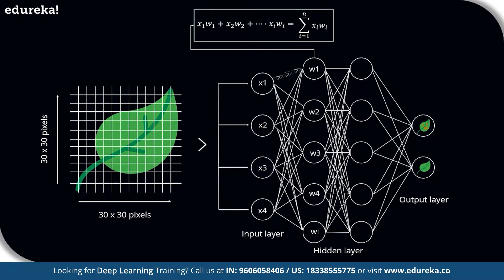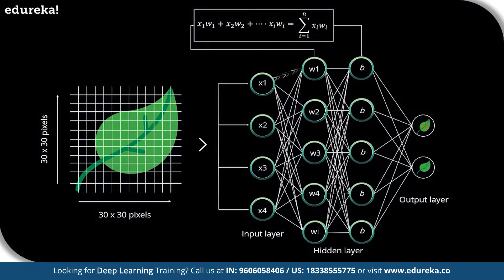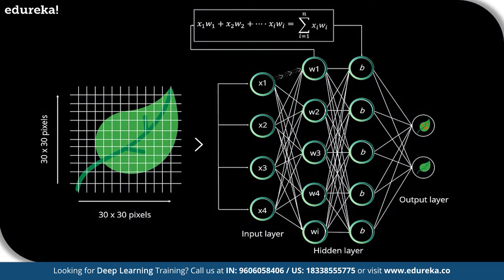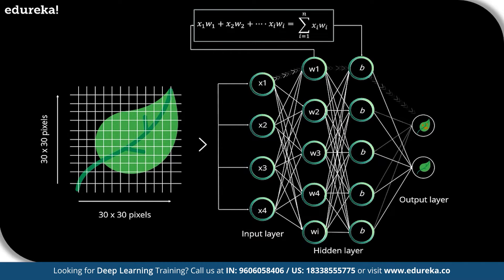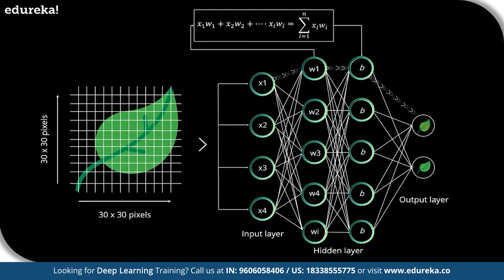A numerical value called bias is assigned to each perceptron. Furthermore, each perceptron is passed through an activation, or transformation function, that determines whether a particular perceptron gets activated or not. An activated perceptron is used to transmit data to the next layer. In this manner, the data is propagated forward through the neural network until the perceptrons reach the output layer.